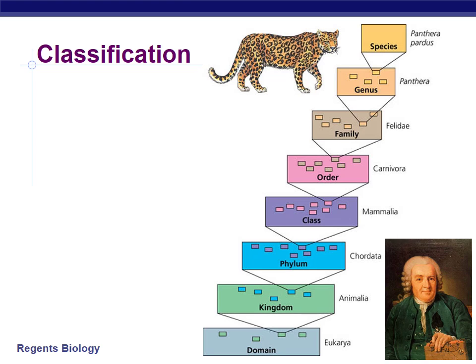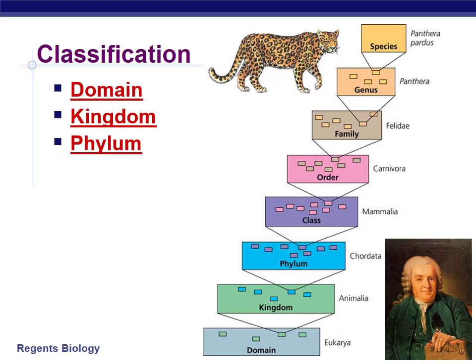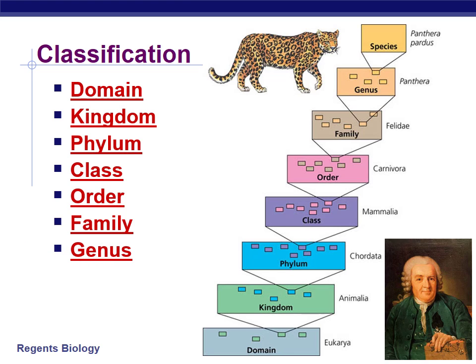Currently, this is the classification system we use. It is based off Carl Linnaeus' classification system. There is a level from broad to narrow that you go through. The broadest classification is the domain, and there are currently three of them. That is broken down into six kingdoms. Each kingdom is broken down into several phyla and subphyla. The phyla are broken down into class, class into order, orders into families, families into genus or genera, and finally the genera are broken down into species.